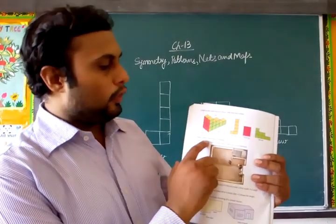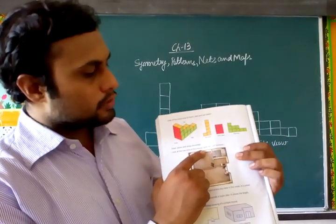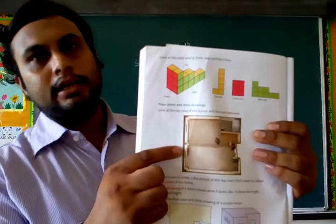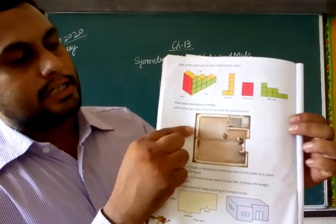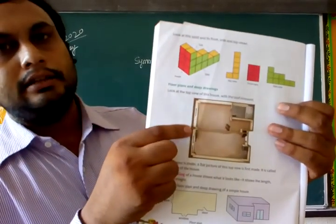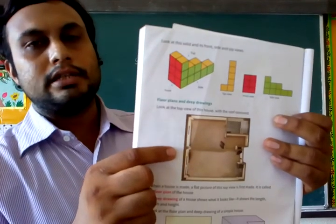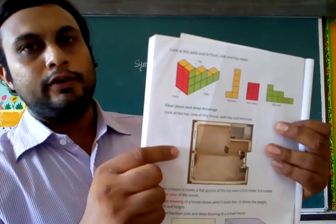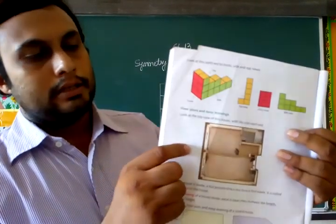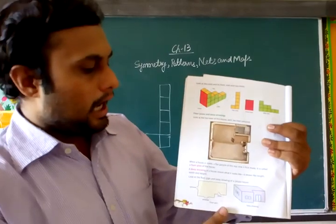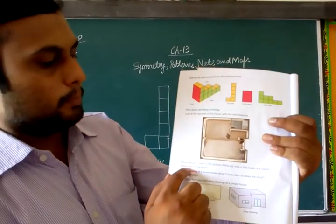Next are floor plans and deep drawings. This is the top view of the house with the roof removed — a house from which the roof has been removed so that you can see the interior of the house easily. This is the house in front of you, this is from the top view. The roof is removed from the top so the interior of the house can easily be seen. A house is made and a flat picture of this top view is first made.